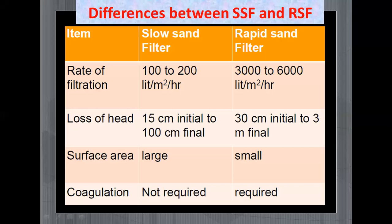So till now we have seen many points from this unit. We have seen the filtration definition, need of filtration, mechanism of filtration, how it occurs, different types of filtration filters, different types of filter media, the requirement of the filter media. Then the slow sand filter, rapid sand filter, gravity filter and pressure filter — we have seen the working of those, and also the back washing of the rapid sand filter.